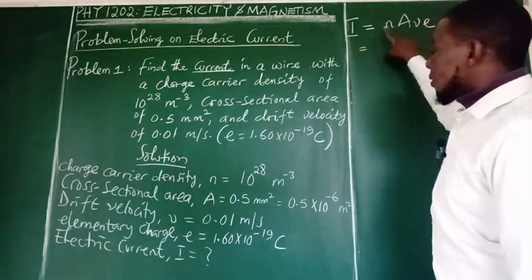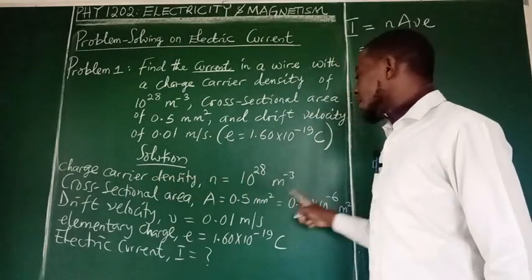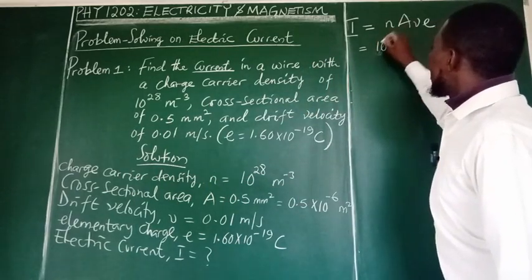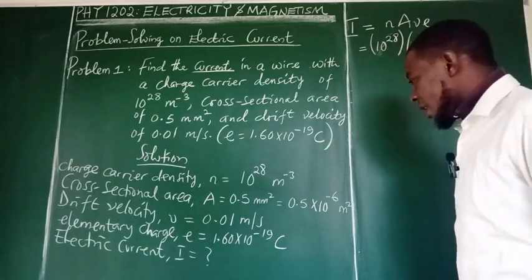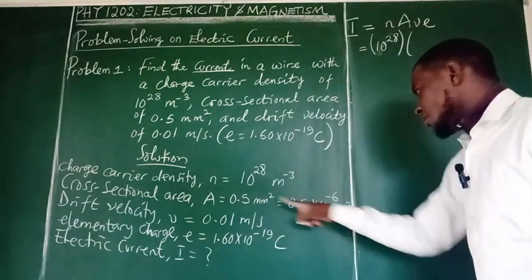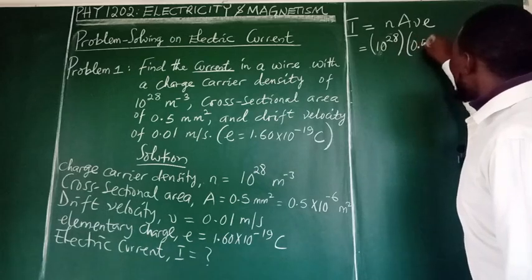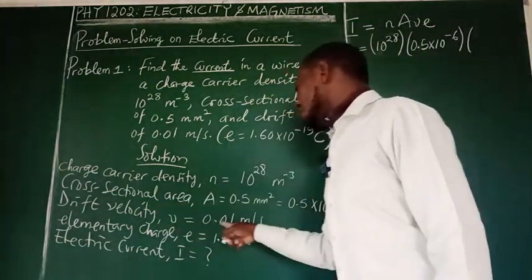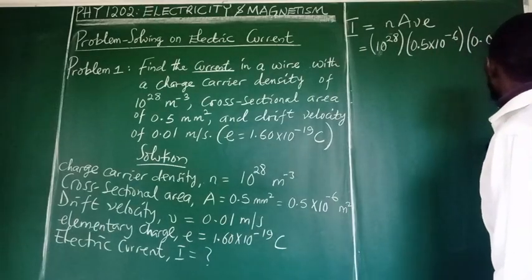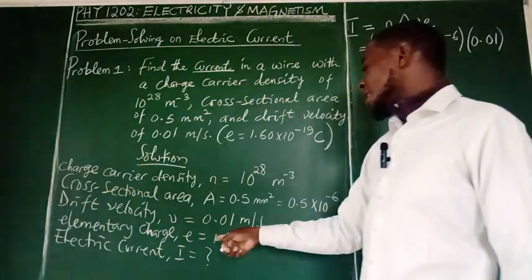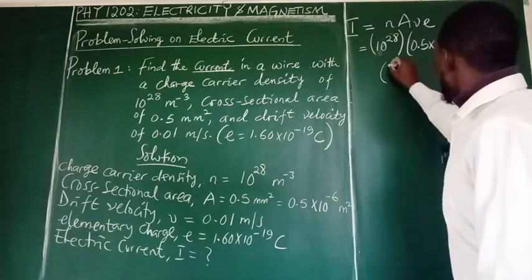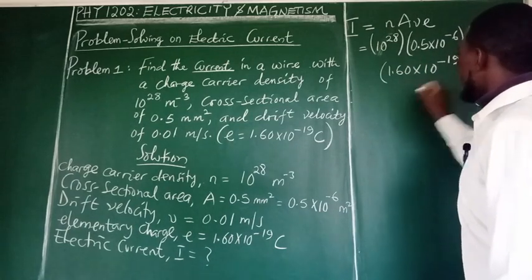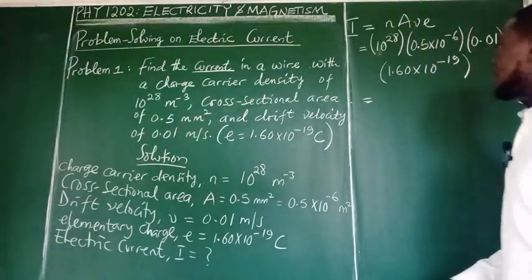Now we make the substitution. Our N is the charge carrier density. So we are going to say 10 to the power of 28, then our A is 0.5 times 10 to the power of minus 6. And then our V drift velocity 0.01 and finally the elementary charge 1.60 times 10 to the power of negative 19 in coulombs. So this will give us the current generated in amperes.